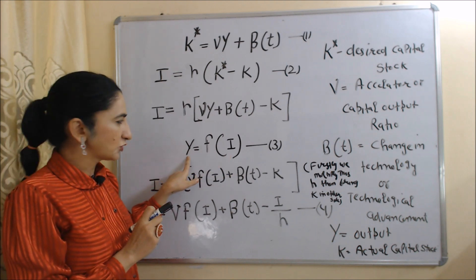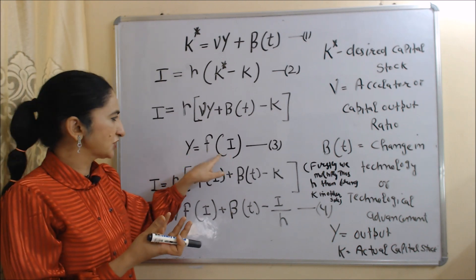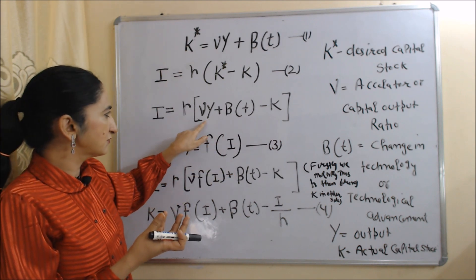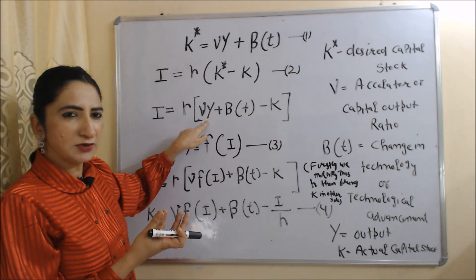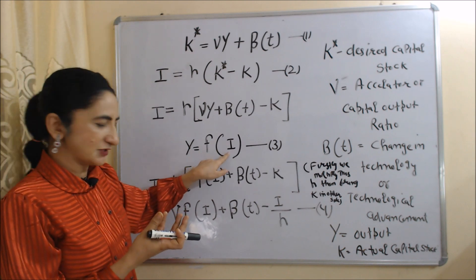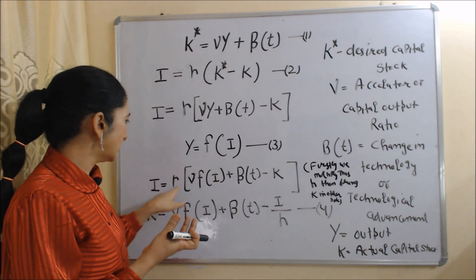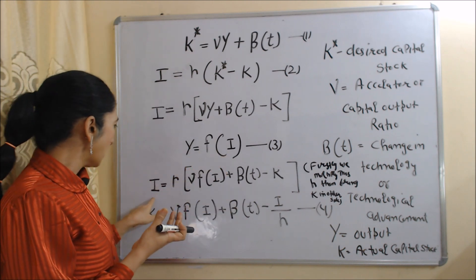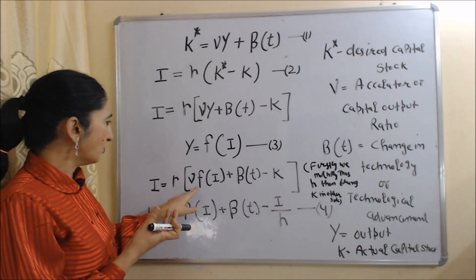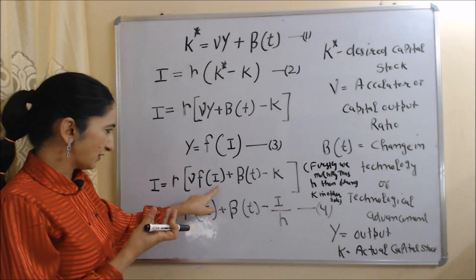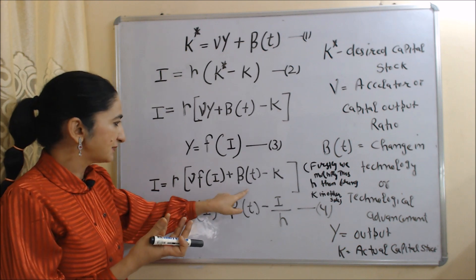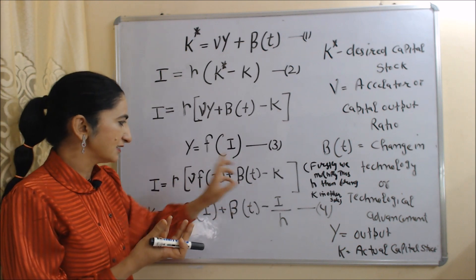As we know, output is a function of investment. Here Y is output, f is function, and I is investment. So in this equation, we put the value of Y — the value of Y is a function of investment — and we get: I = λ[ν·f(I) + β(t) − K].